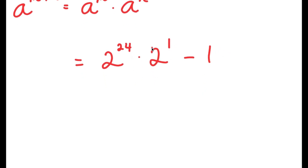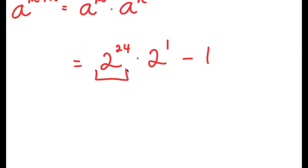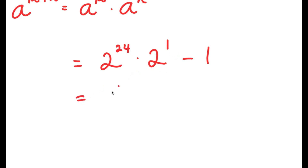Our goal throughout this video is to change our values to be as small as possible, so that at the end we can do whatever we need to get our final result. So, 2 to the power of 24 — how do we simplify this and make it even smaller? I can rewrite this as 2 to the power of 12 times 2.